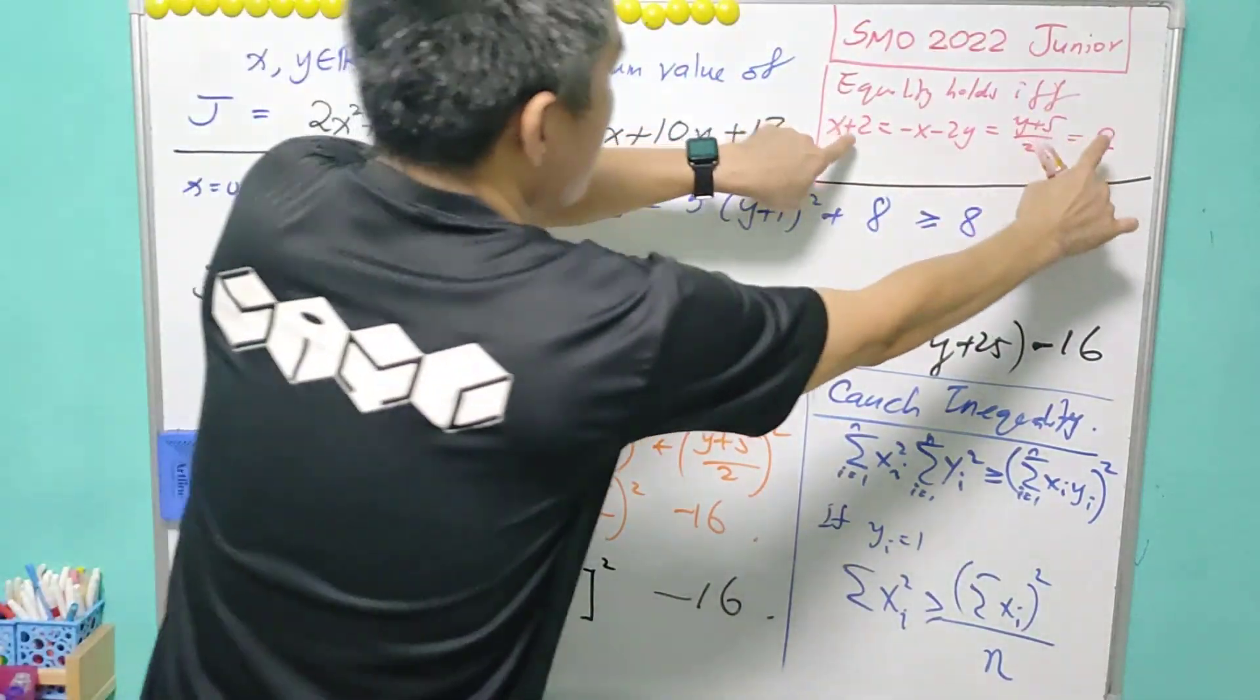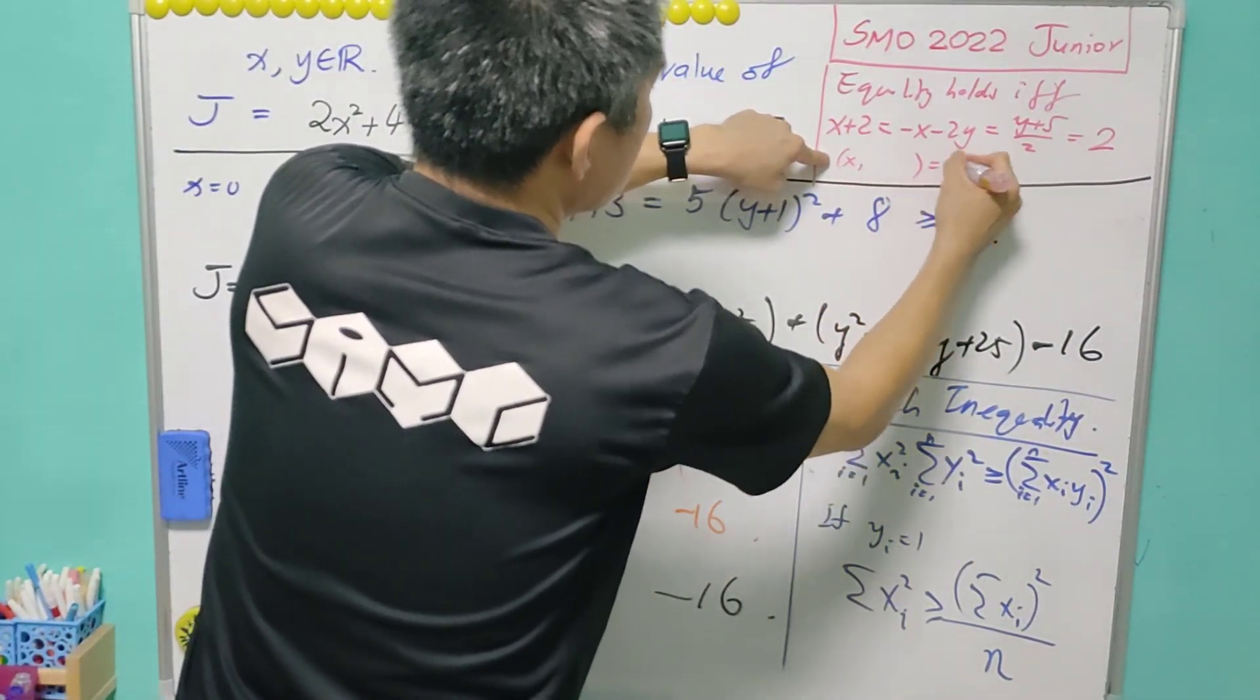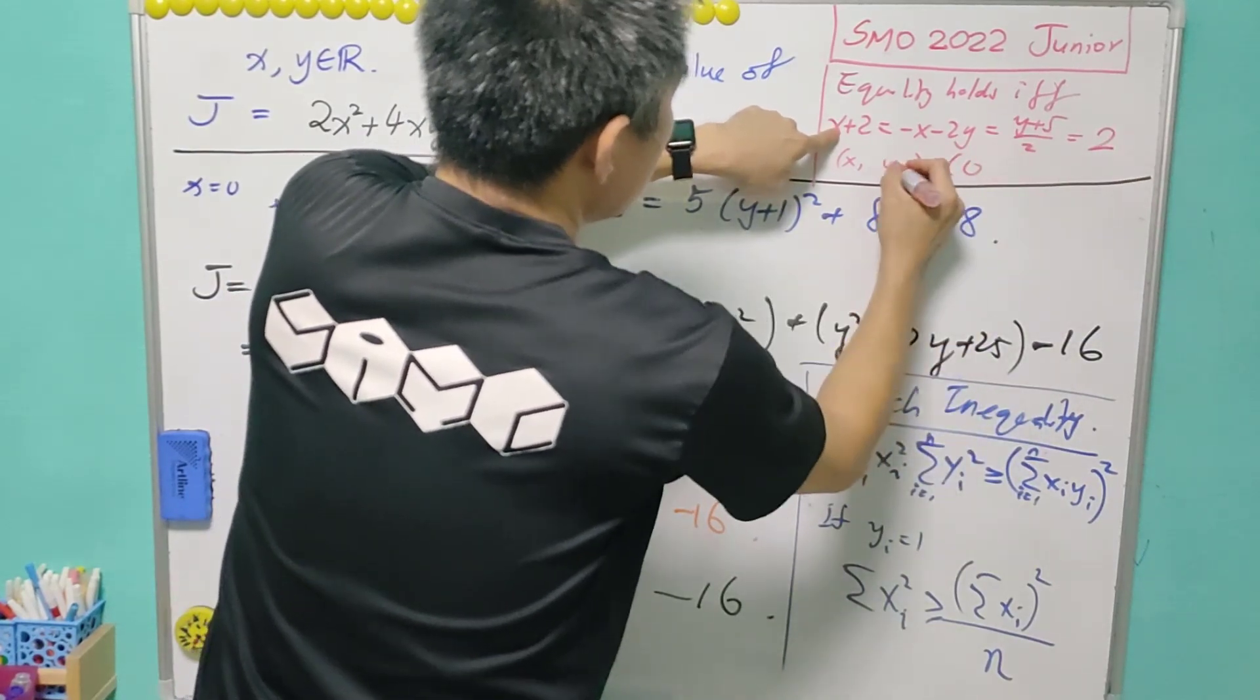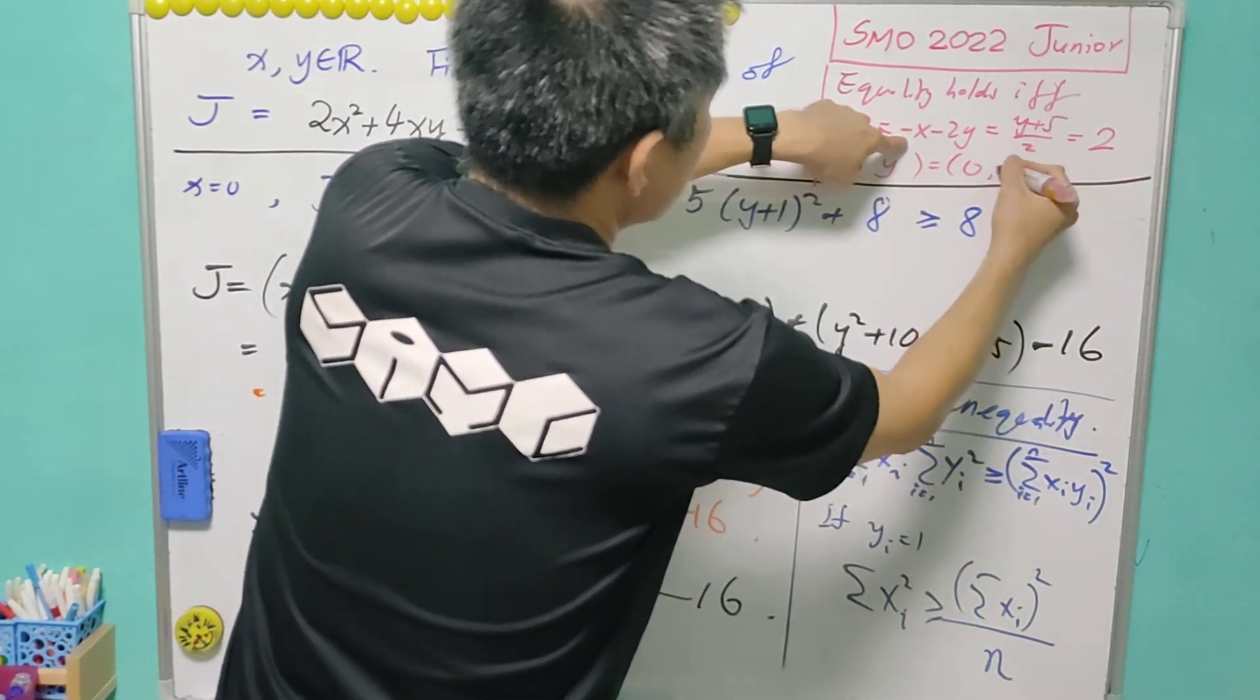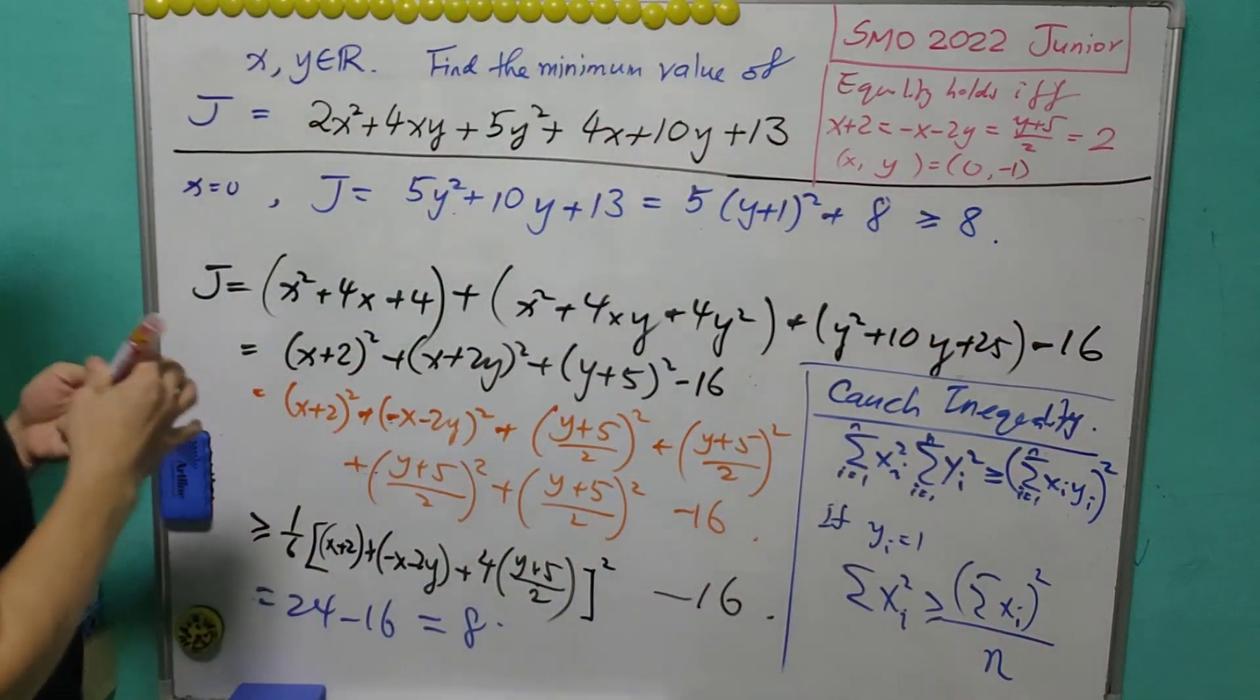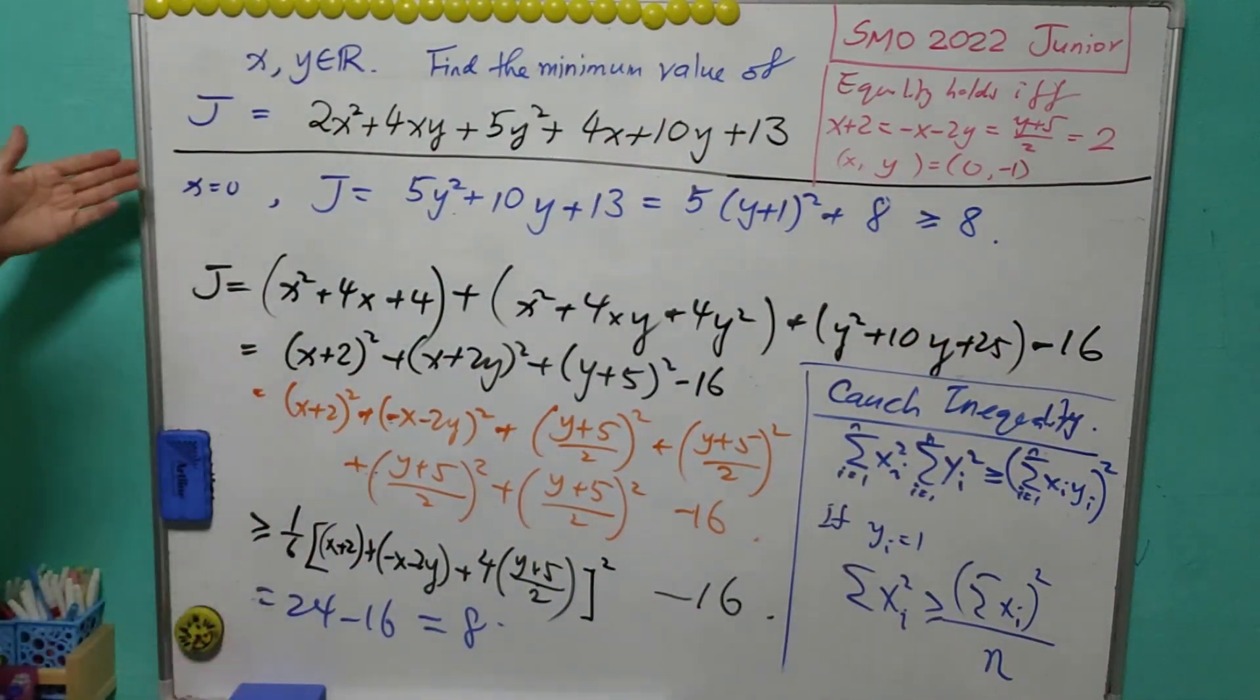So it means that from here, x is equals to 0, and y is equals to negative 1. And this is exactly what we have just now.